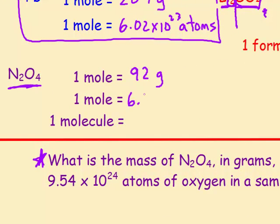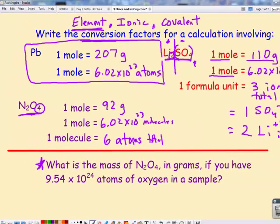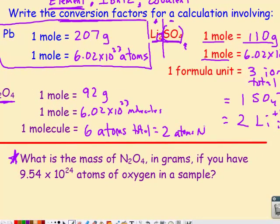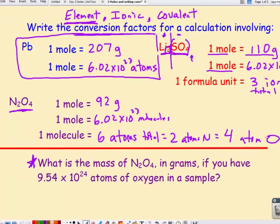I can say one mole equals Avogadro's number of the fundamental particle. It's covalent bonds, so molecules. So now the next conversion, I can have one molecule equals six atoms total. Or I can say I have two atoms of nitrogen. I can also say that I have four atoms of oxygen. So it depends on what the question is asking me to do.